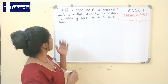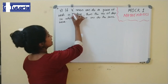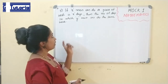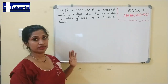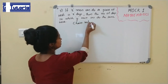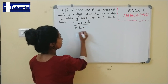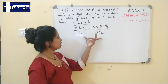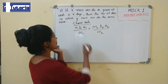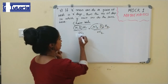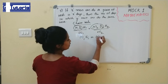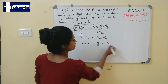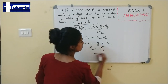Next question: if X men can do a piece of work in X days, in how many days can Y men do the same work? We use the chain rule: M1 × D1 = M2 × D2. M1 = X men, D1 = X days. M2 = Y men. So D2 = X × X / Y = X² / Y days.